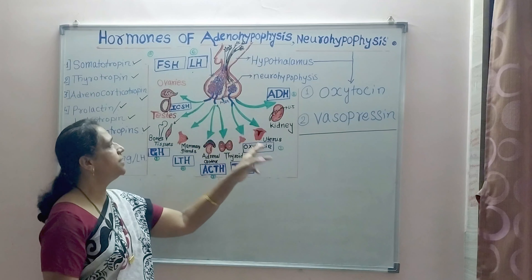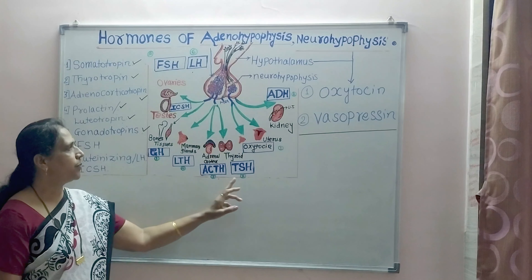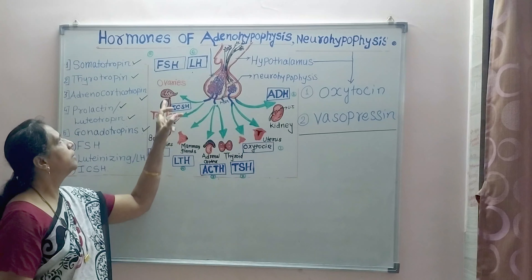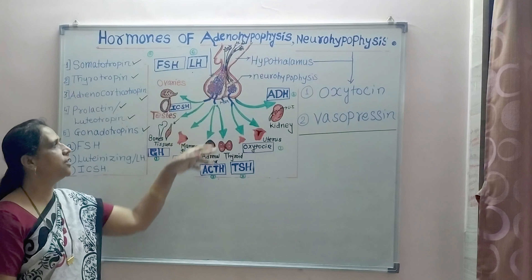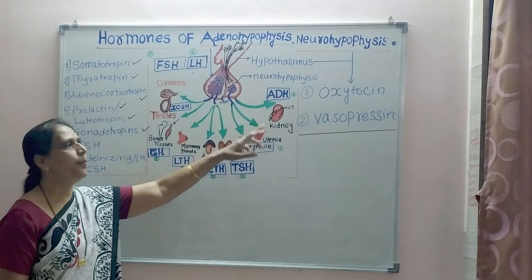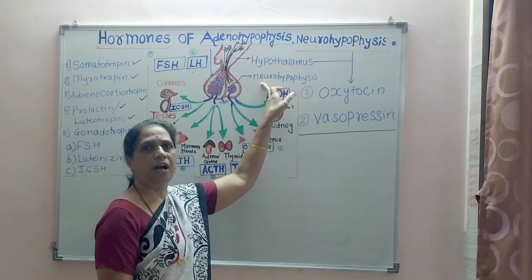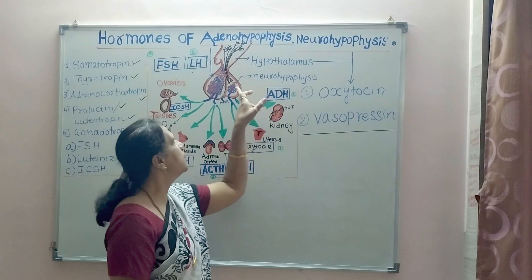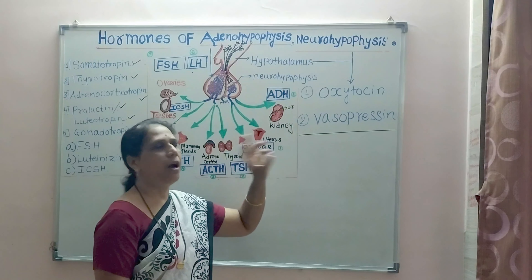So the anterior pituitary secretes six different hormones: growth hormone, thyroid stimulating hormone, ACTH, FSH, LH, and prolactin. The posterior pituitary does not secrete any hormones itself; the hormones are secreted by the hypothalamus, and the posterior pituitary only stores and releases two hormones.